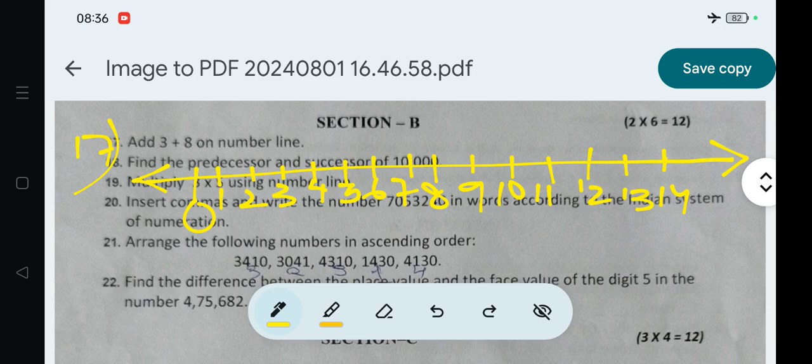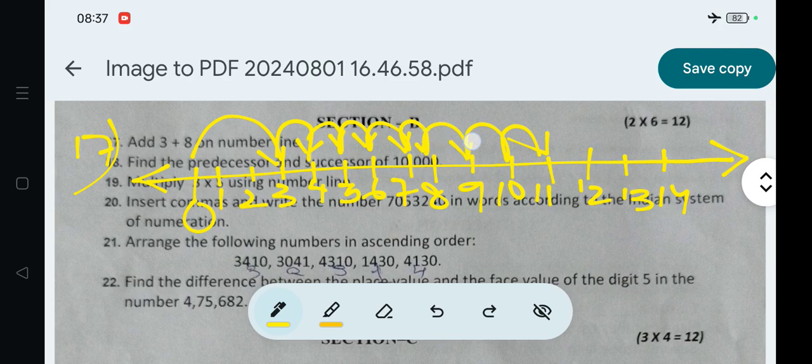Next, if you have 3 plus 8, you will start from 0. Then you will move 8 places to the right hand side because it's addition. How many places will we move? 8 places. Start from 3, then move 1, 2, 3, 4, 5, 6, 7, 8. 3 plus 8 equals 11. So you will mark at 11. Therefore, 3 plus 8 is equal to 11.